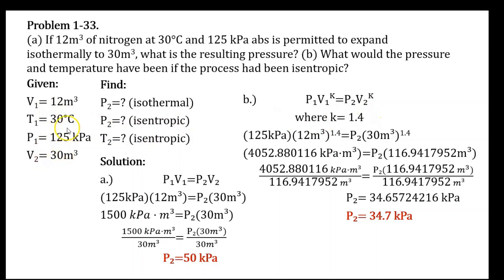Plugging in the values: 125 kilopascal times 12 cubic meters raised to 1.4 equals P2 times 30 cubic meters raised to 1.4. This yields 4052.880016 kilopascal·cubic meters equals P2 times 116.9417952 cubic meters. Dividing both sides, our final pressure of nitrogen in the isentropic process is 34.7 kilopascal.